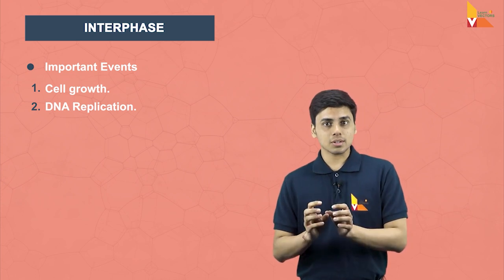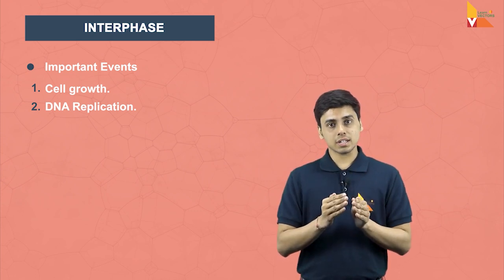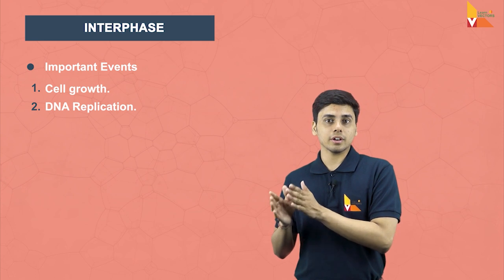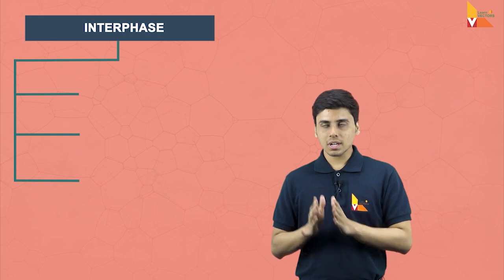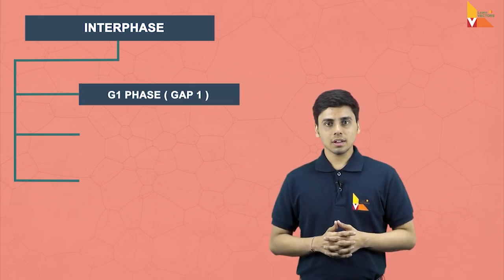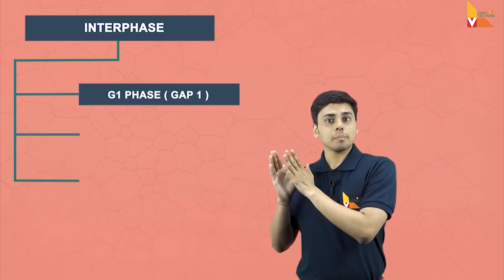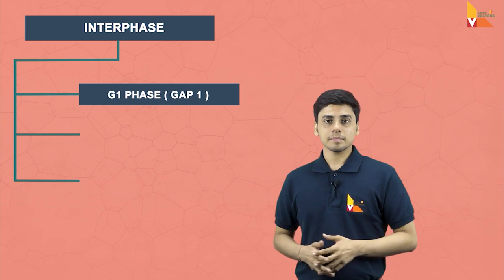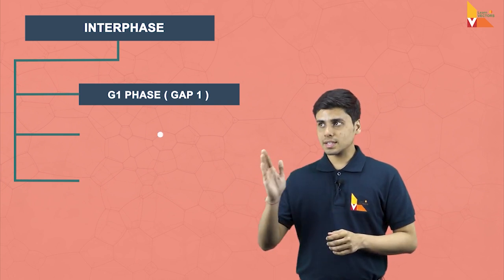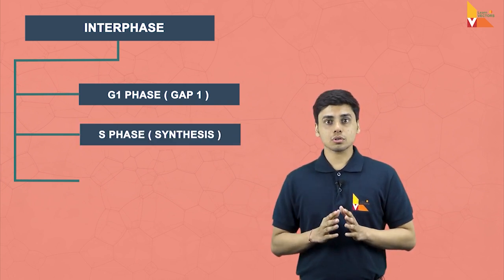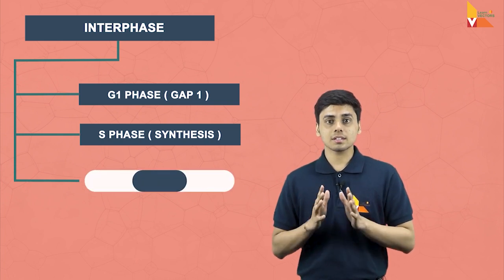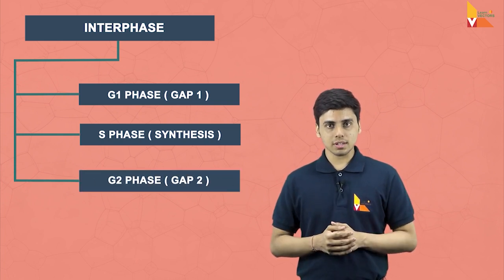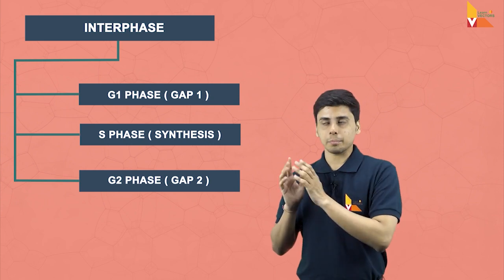This interphase stage is further divided into sub-phases. The first is the G1 phase, also called the GAP 1 phase. The second is the S phase, also called the synthesis phase. And the third is the G2 phase, also called the GAP 2 phase.